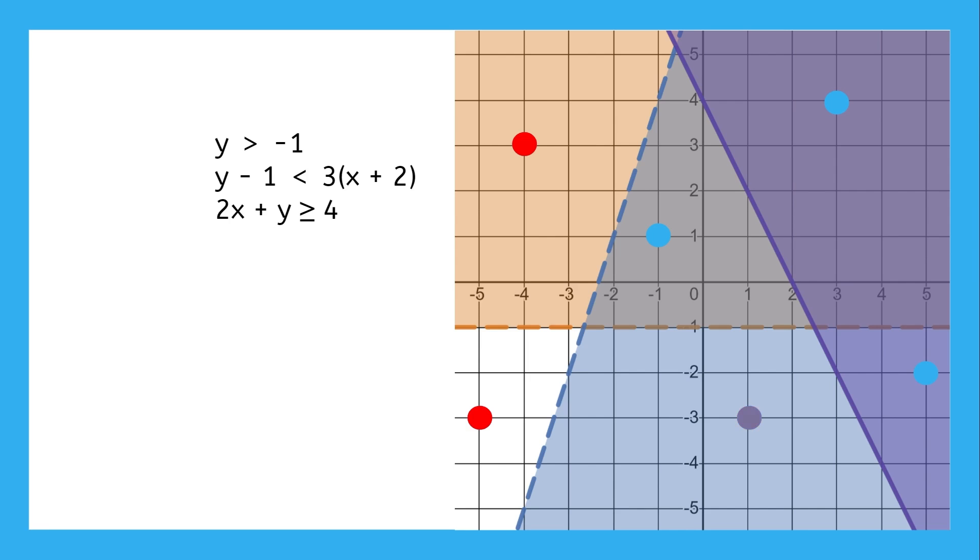And (1, -3) is also not right because it's only in the blue. What about (-1, 1)? It's in both the blue and orange areas, but it's not in the purple.